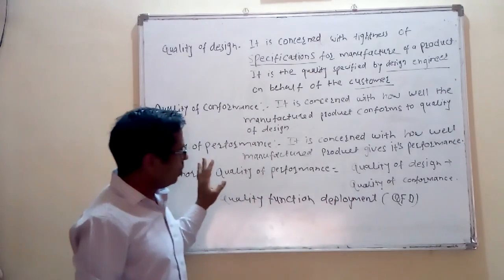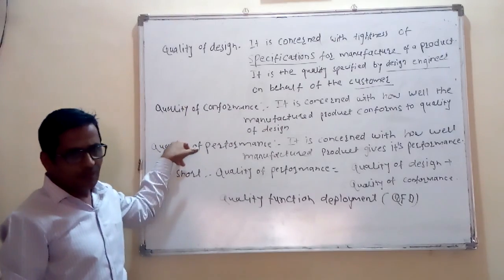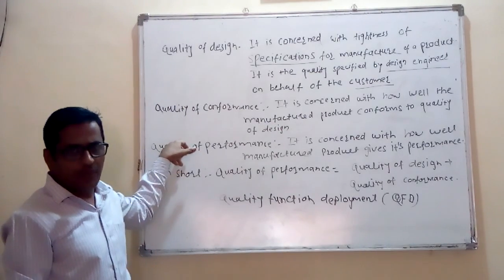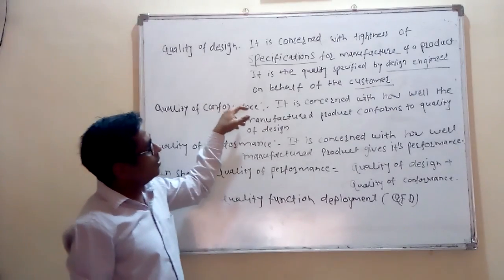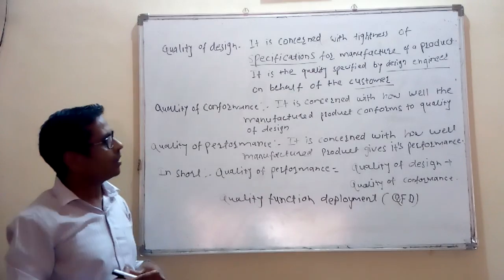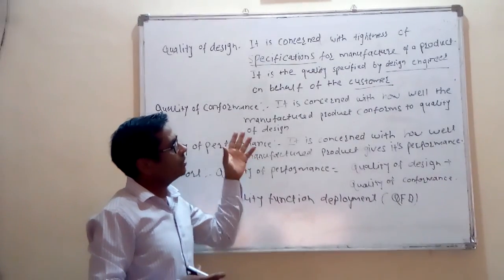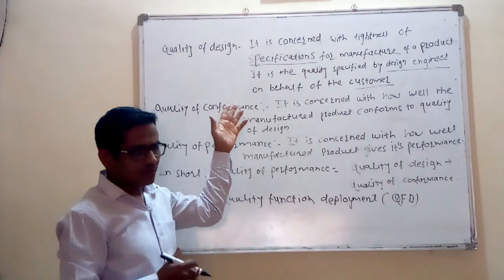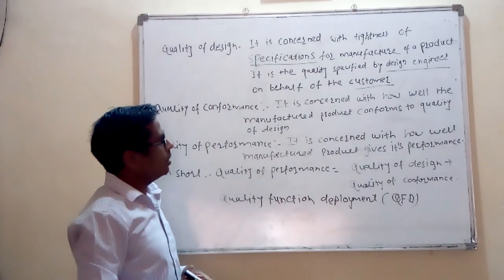Now, why are both these varieties important? We will see. Suppose we have to construct a building. Then the planning engineer plans on paper — there is a design engineer who designs the floor requirements. So, how many floors do you require? How many persons?